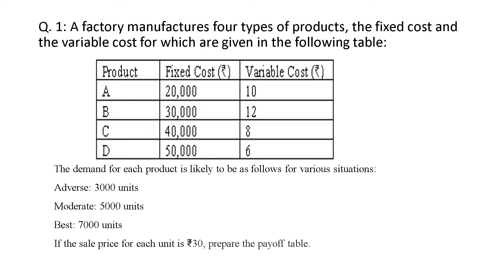Here is a question for you. A factory manufactures four types of products, the fixed cost and the variable cost for which are given in the following table. The products are A, B, C and D. For A, the fixed cost is 20,000 rupees and the variable cost is 10. For B, 30,000 and 12. For C, 40,000 and 8. For D, it is 50,000 and 6.